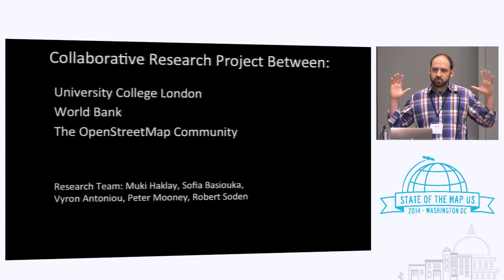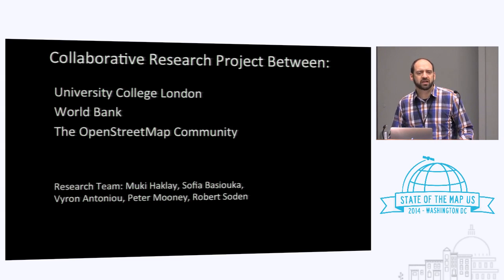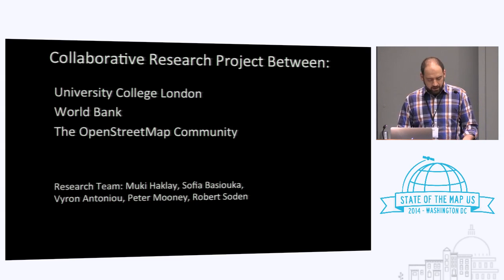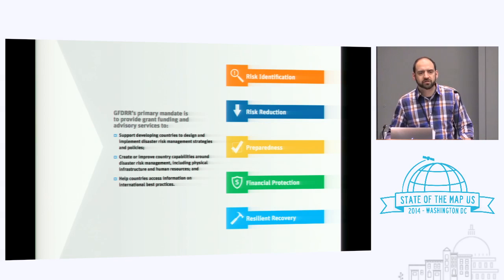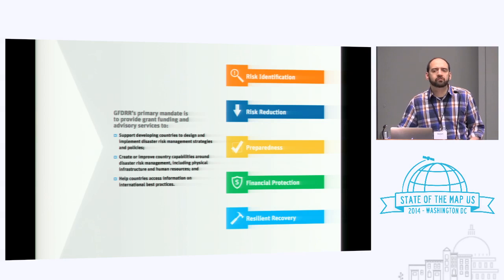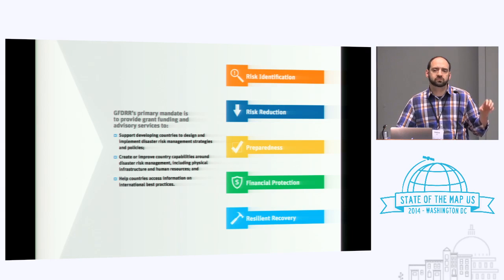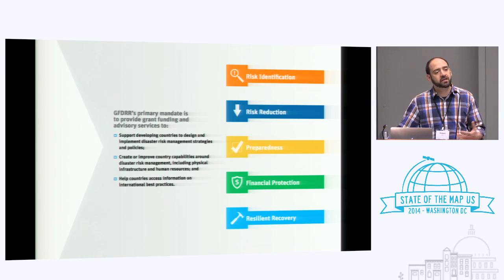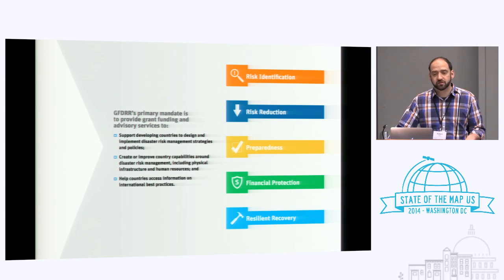First I want to zoom out a little bit and talk about why is the World Bank, why is GFDRR interested in OSM and what motivated this research. GFDRR is the part of the World Bank that works to help developing countries ensure that their development process is resilient to disasters and they're able to understand and manage the risks posed by natural hazards.